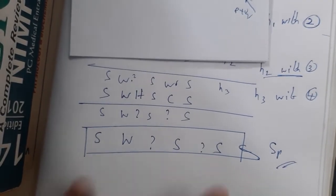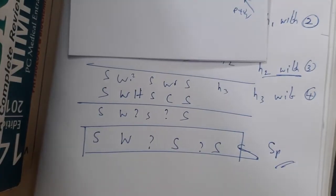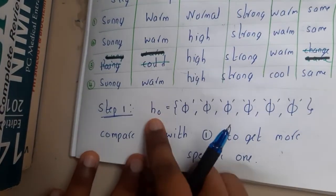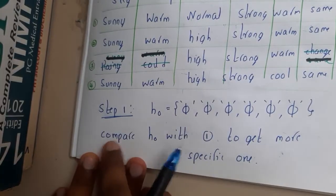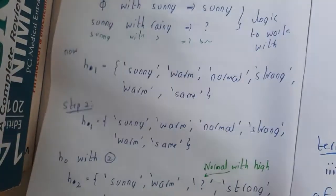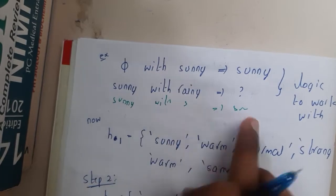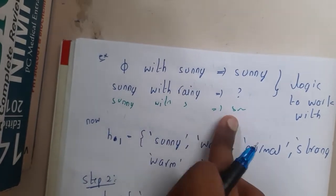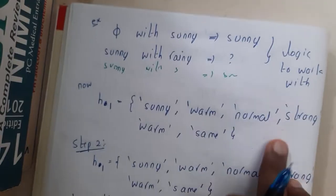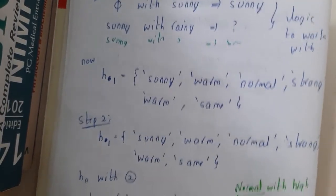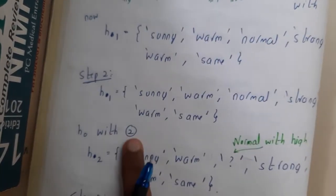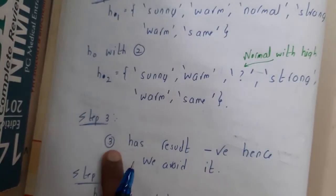So our final specific hypothesis is (sunny, warm, ?, strong, ?, same). This is the specific hypothesis we obtained. Now let us go through the bookish way to write it for an examination. You write h0 first (six φ symbols), then compare h0 with row 1 to get the result, then compare that result with row 2 to get h2.